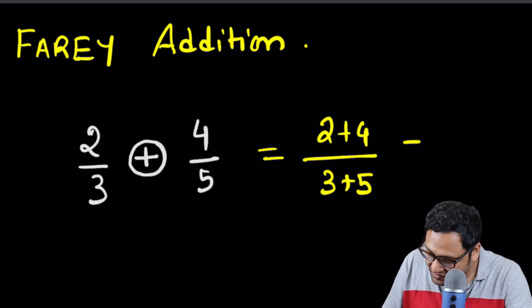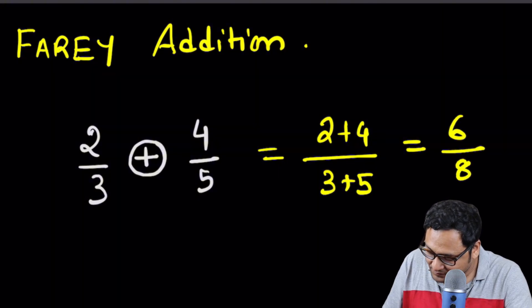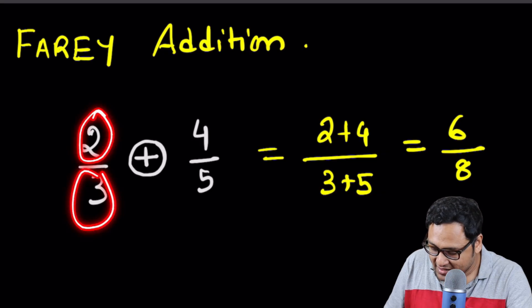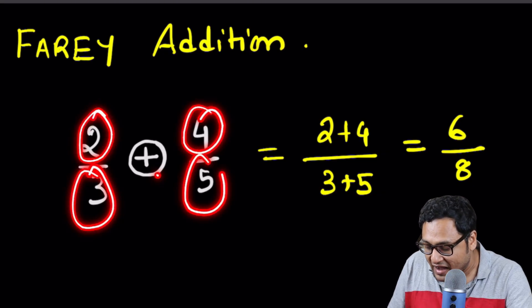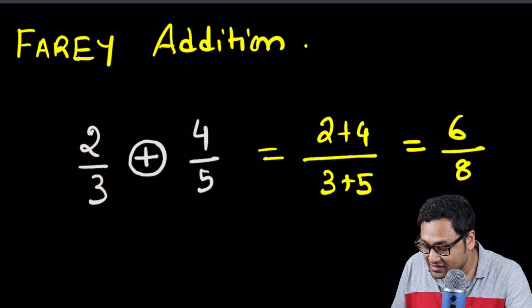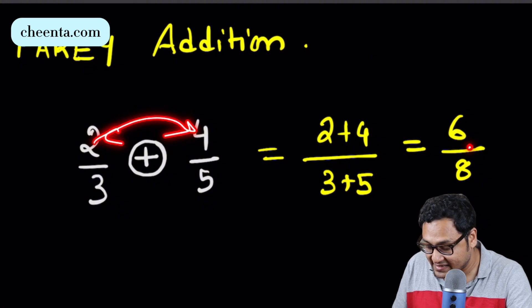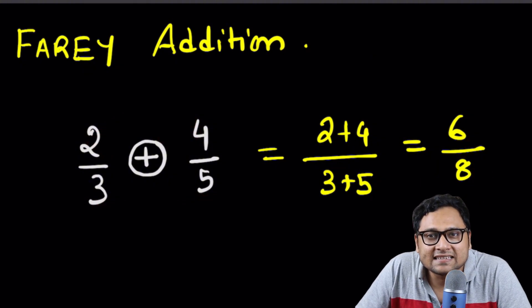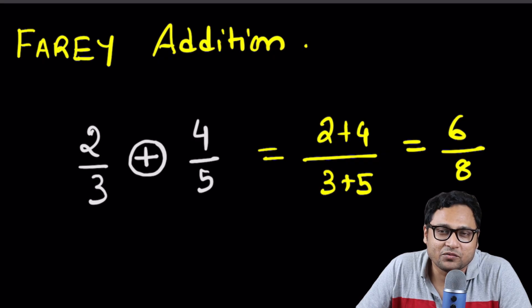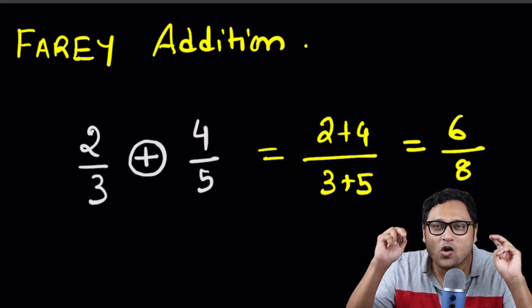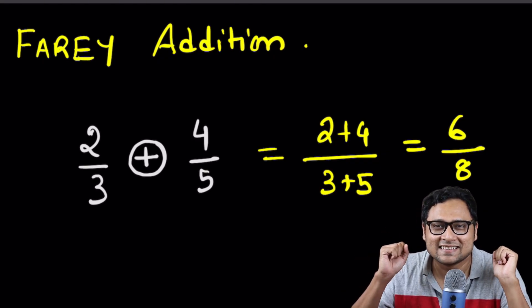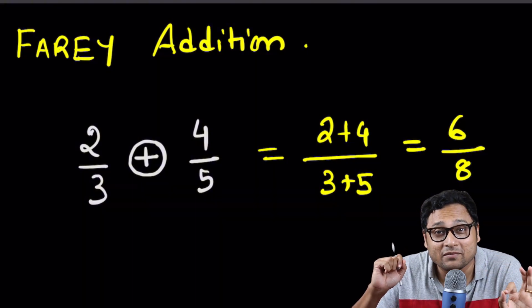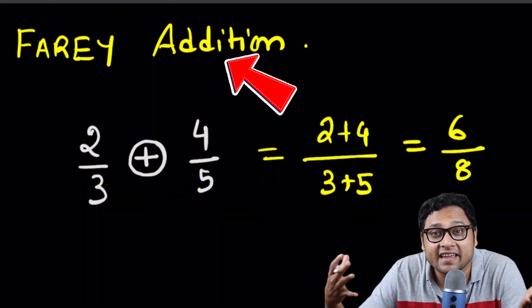We have 6 by 8. So 2 by 3 plus 4 by 5 turns out to be 2 plus 4 is 6, 3 plus 5 is 8. And this particular method, which is of course the wrong way to add fractions, has a special name. It's called the Farey Addition.